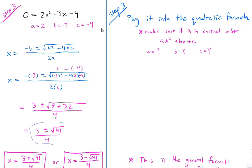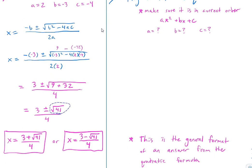Simplify — this is as far as you get since we don't have a calculator for semester. You can separate this into two answers using the plus-or-minus. It's either 3 plus square root of 41 over 4, or 3 minus square root of 41 over 4. That's what the plus-or-minus really means — two separate equations written at once, just like x equals positive or negative 2 is shorthand for two answers.